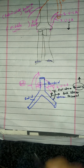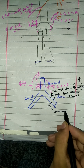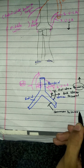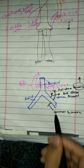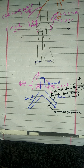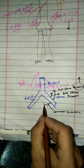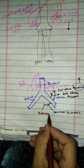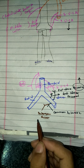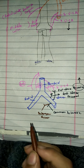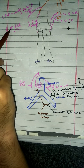From the ulnar artery, one more branch originates known as the common interosseous artery, which pierces the interosseous membrane. From the common interosseous artery, one more artery originates known as the interosseous recurrent artery. This interosseous recurrent artery anastomoses with the posterior descending branch, also known as the middle collateral artery.